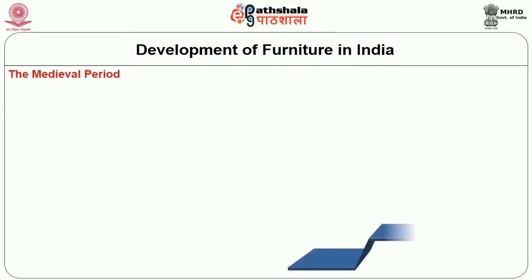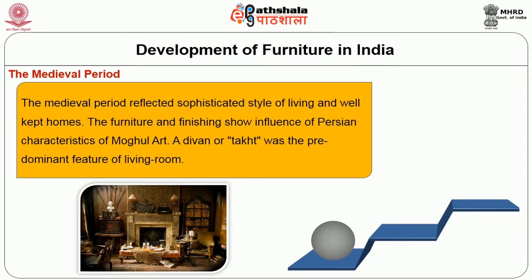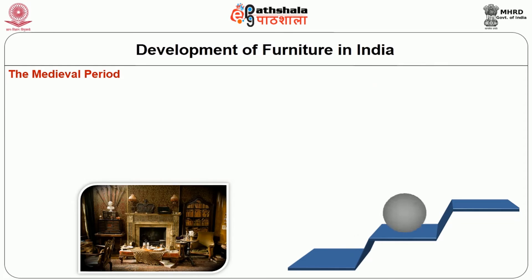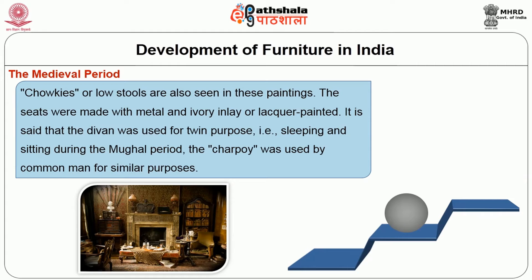The Medieval Period: The medieval period reflected a sophisticated style of living and well-kept homes. The furniture and furnishings show the influence of Persian characteristics of Mughal art. A diwan or takht was the predominant feature of the living room. Chaukis or low stools are also seen in these paintings. The seats were made with metal and ivory inlay or lacquer painted. The diwan was used for twin purposes — sleeping and sitting — and during the Mughal period, the charpoy was used by the common man for similar purposes.